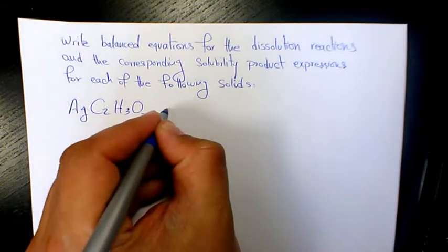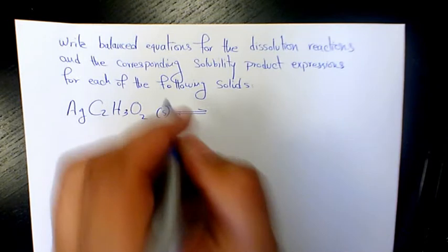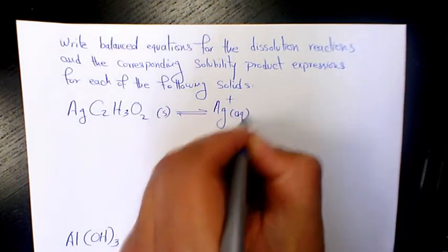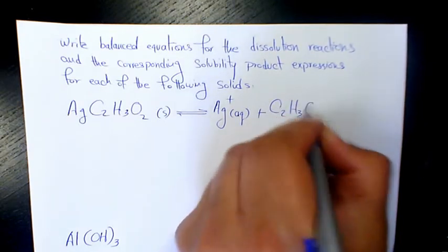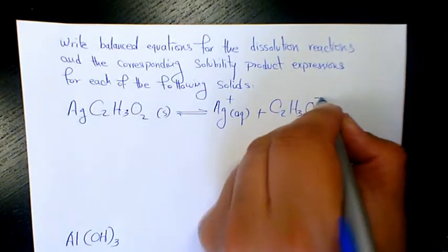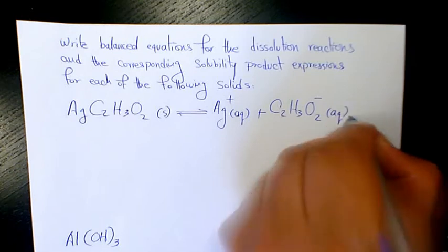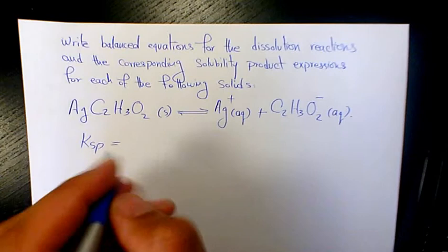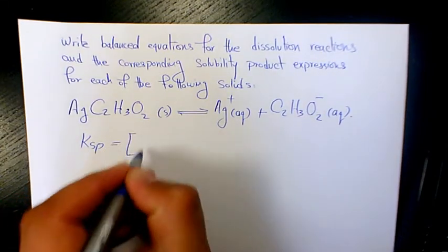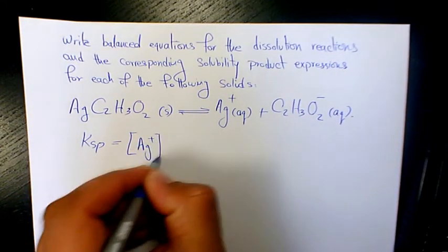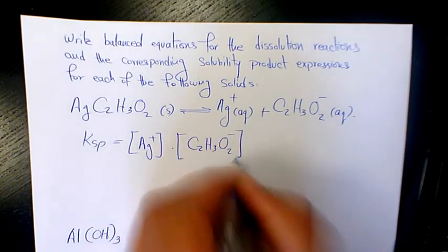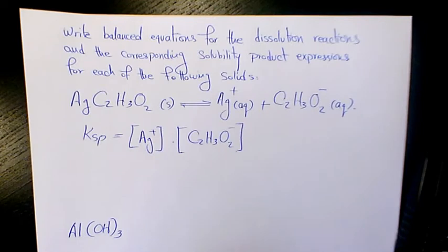When you dissolve it in solid form, it's going to produce Ag+ in aqueous phase plus C2H3O2- aqueous phase. So the Ksp solubility product constant is [Ag+] times the concentration of [C2H3O2-]. That's going to be the expression for this compound.